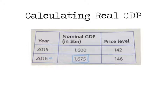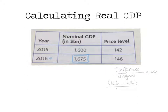What we need to do is work out how the price level has changed and what the rate of inflation is. To do that, you work out the difference between the price levels divided by the original, times by 100. So we do 146 minus 142 to get a difference of 4, divide that by the original which is 142, times that by 100 to get a percentage, and you'd get 2.8 percent.